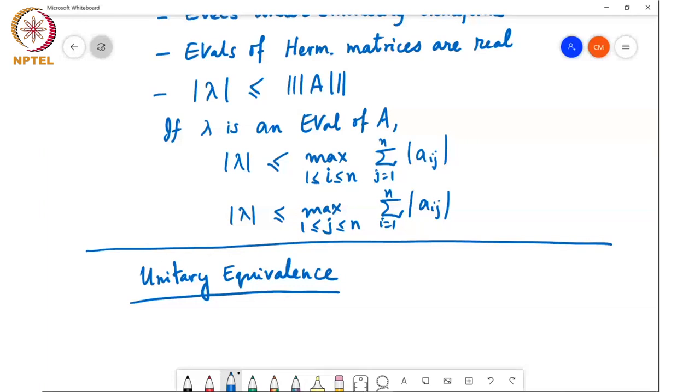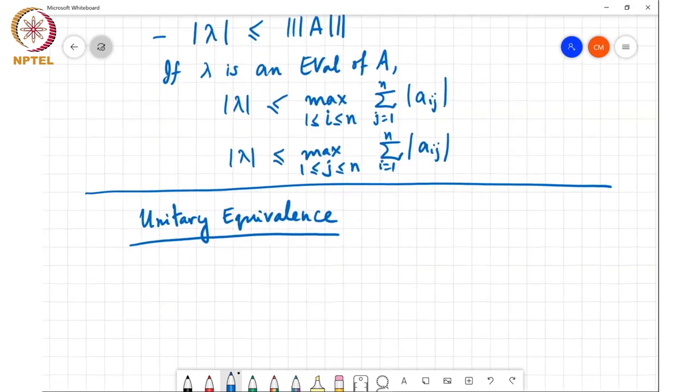Remember that two matrices are similar if A and B are similar, if you can write B as S inverse AS for any invertible matrix S. But if this S matrix happens to be a unitary matrix, we say that A and B are unitarily similar or unitarily equivalent. And so basically that's the core idea here.